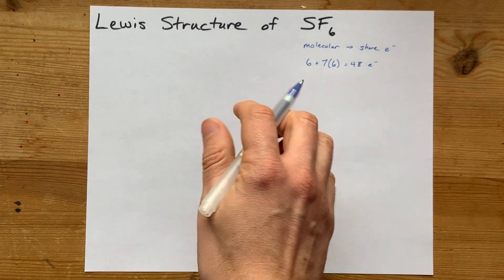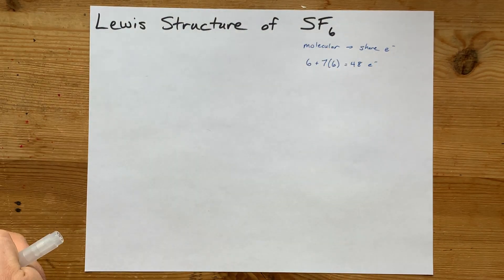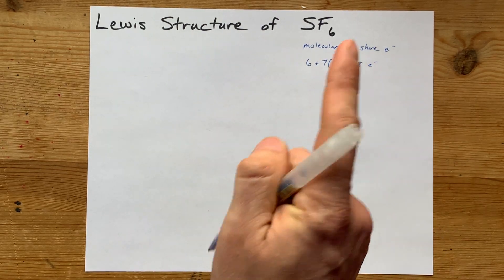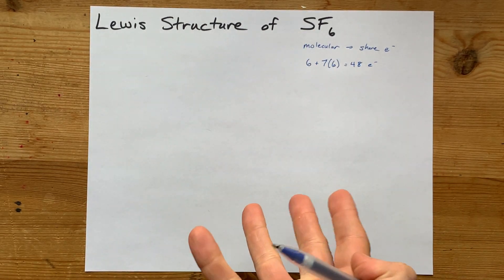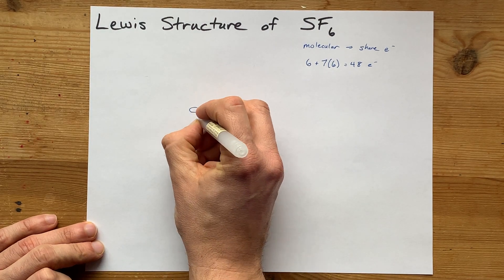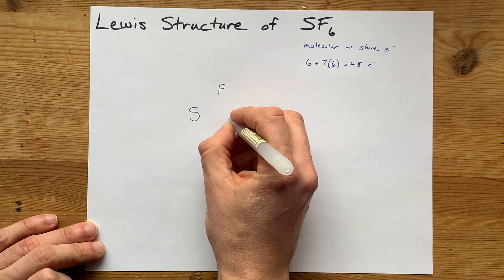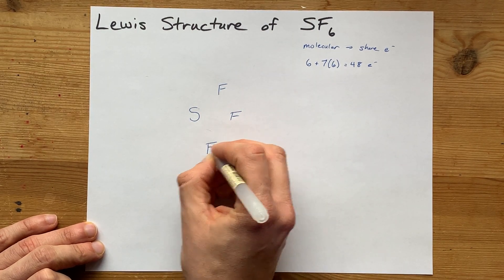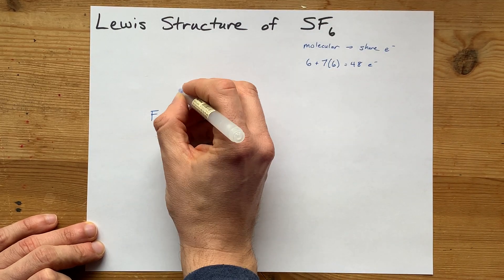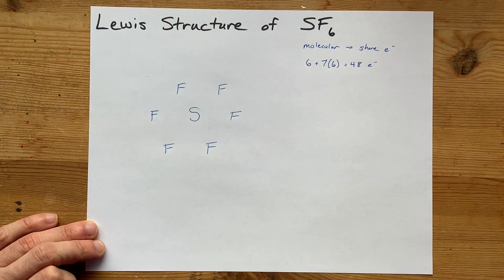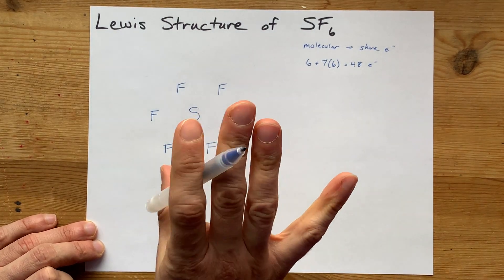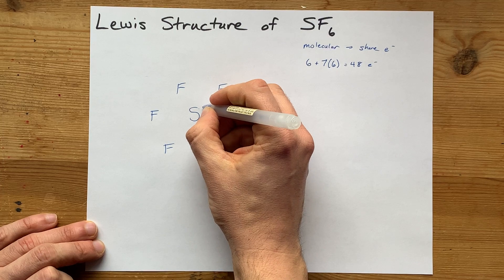What I do next is I put one of the atoms — usually the one that can make the most bonds — in the center. Fluorine likes to have just one bond; sulfur can accommodate up to 6. I put sulfur in the center — you probably could have guessed that — and then put my 6 fluorines around it. Next, I connect the central atom with the outer atoms with single bonds only to start.